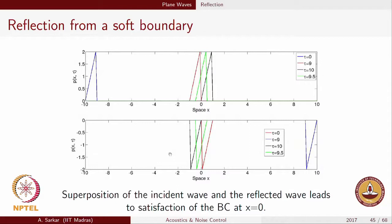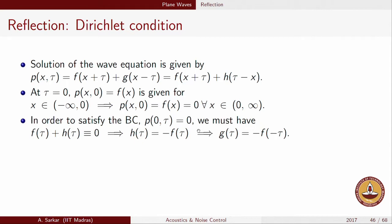In the last class we talked about the reflection of a plane wave, in particular reflection from a soft boundary condition. At tau equals 0 there is an incident wave shown in blue, and progressively as time progresses it takes a red form at tau equals 9. To maintain the boundary condition at x equals 0 — pressure equals 0 — we call this a soft boundary. Another wave negates the incident wave, and as these two waves cross over, in superposition they enforce the boundary condition at x equals 0. This is the origin of reflection due to the Dirichlet condition.